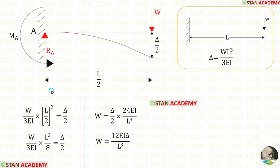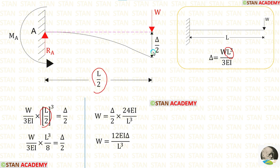We are only considering the left half of the fixed beam. So, in the formula, instead of L, we have to apply L/2. Here, the deflection is delta/2. So, instead of delta, we have to apply delta/2. After simplification, we are getting W = 12EI·delta/L³.